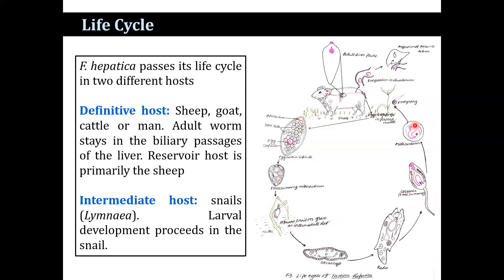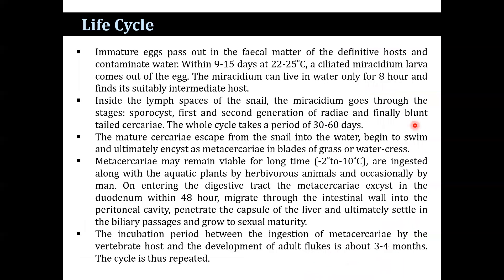Metacercariae may remain viable for a long time and are ingested along with aquatic plants by herbivore animals and occasionally by humans. On entering the digestive tract, the metacercariae excyst in the duodenum within 48 hours and migrate through the intestinal wall into the peritoneal cavity. They then penetrate the capsule of the liver and ultimately settle in the biliary passage and reach sexual maturity. The incubation period between ingestion of metacercariae by the vertebrate host and development of adult flukes is about three to four months, after which the cycle is repeated.